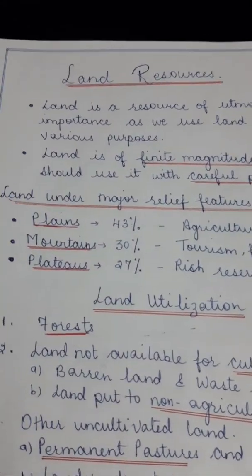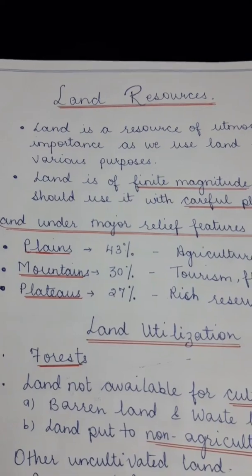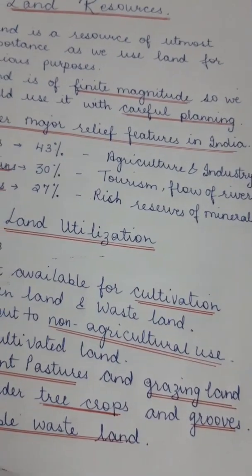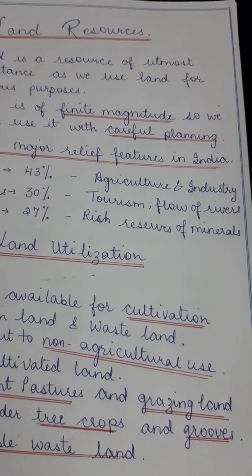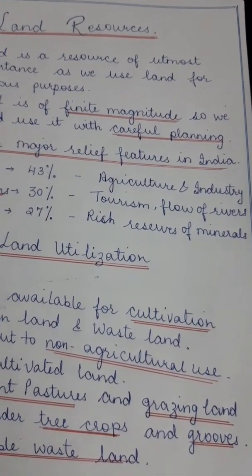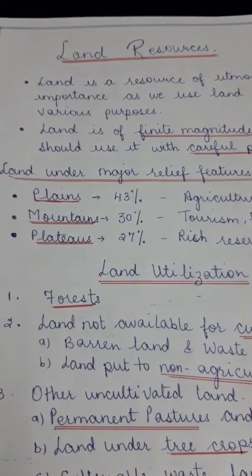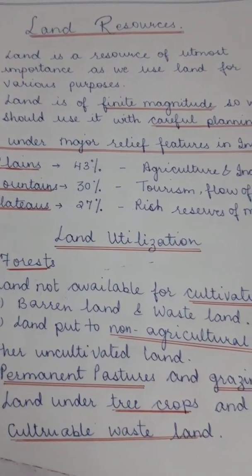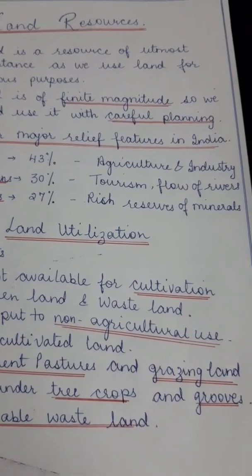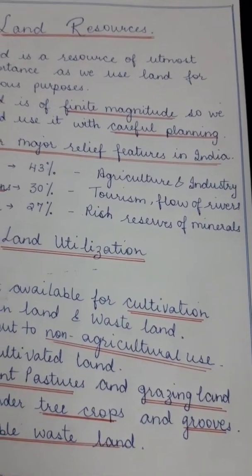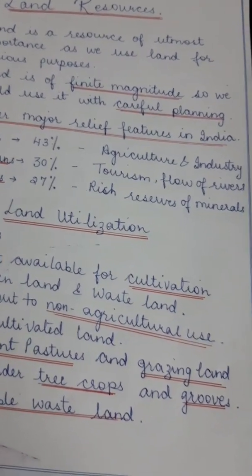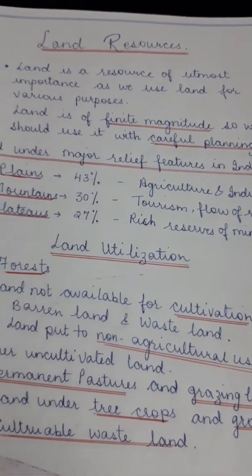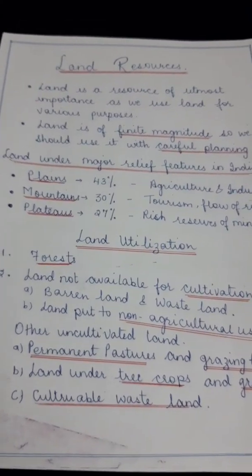Mountains occupy 30% of the total geographical area. Tourism flourishes there, and the mountains are also responsible for allowing perennial flow of rivers. Then the plateau region occupies 27% of the total geographical area. The plateau region is extremely rich in mineral resources and is also known as the storehouse of minerals, as rich reserves of minerals are found in the plateau region.